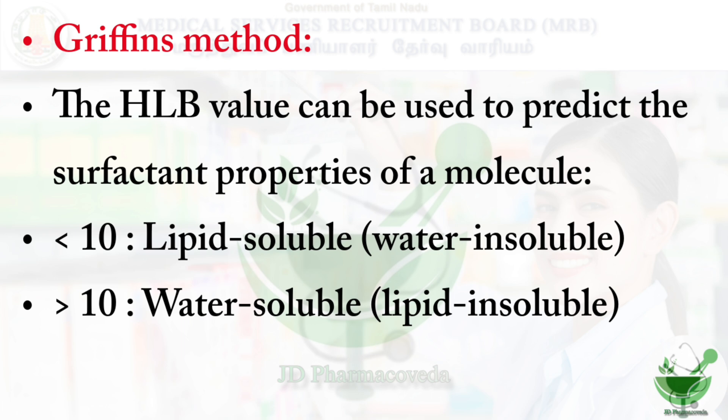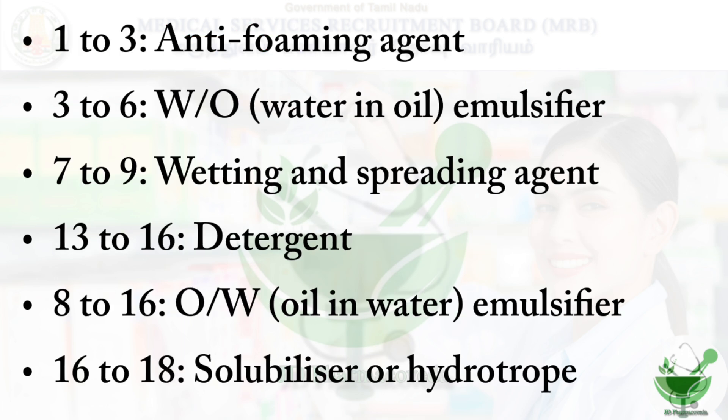HLB value ranges: 1 to 3 — anti-foaming agents; 3 to 6 — water-in-oil emulsifiers; 7 to 9 — wetting and spreading agents; 8 to 16 — oil-in-water emulsifiers; 13 to 16 — detergents; 16 to 18 — solubilizers or hydrotropes.